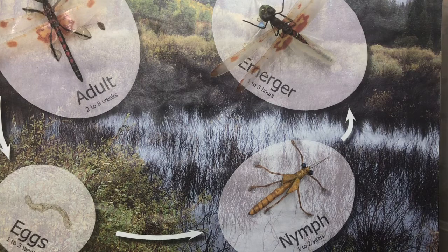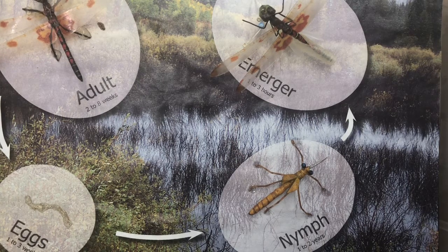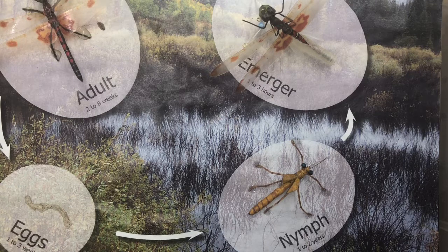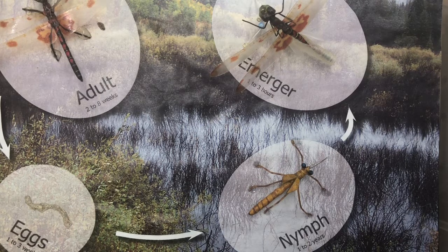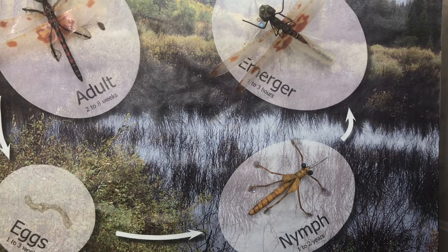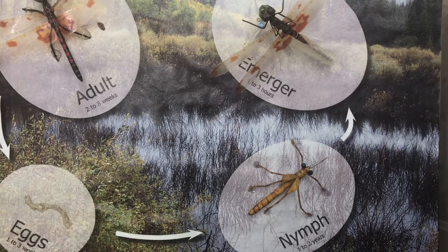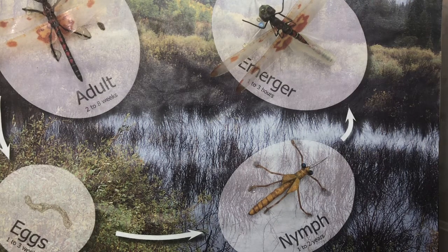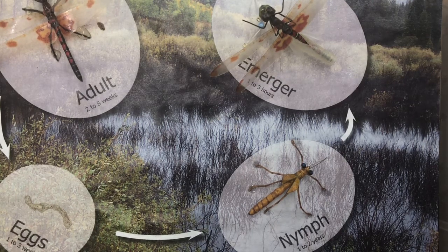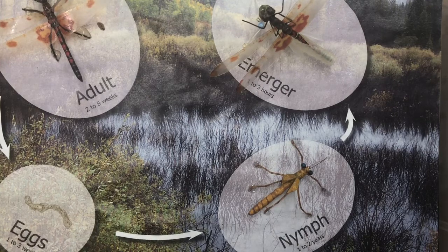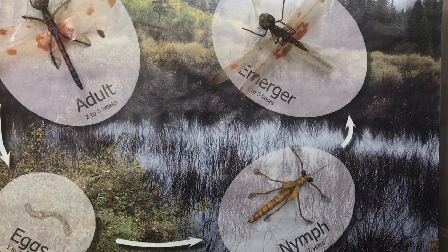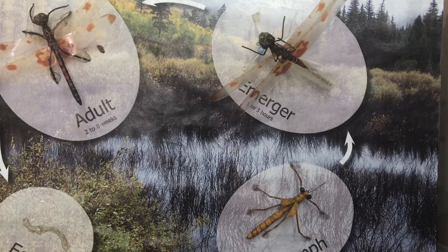What you see in front of you is a model of a dragonfly's life cycle, starting with the eggs and then hatching to become a nymph where they live one to two years in water, usually in ponds or rivers, then emerging out of the nymph state into the adult dragonfly that we all know and love.